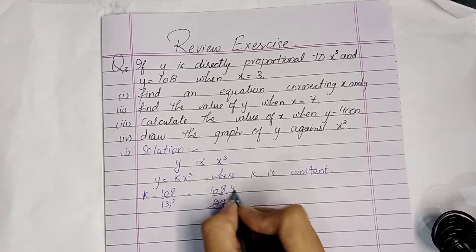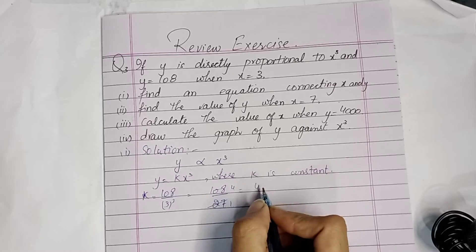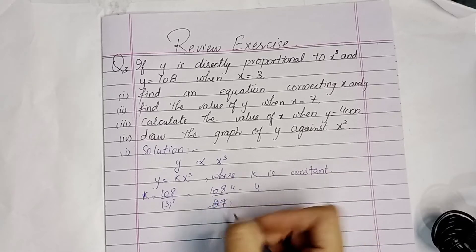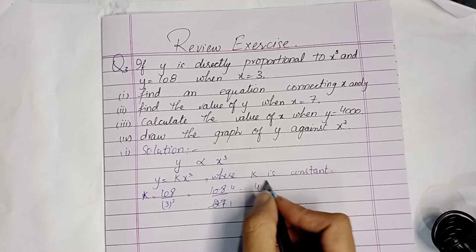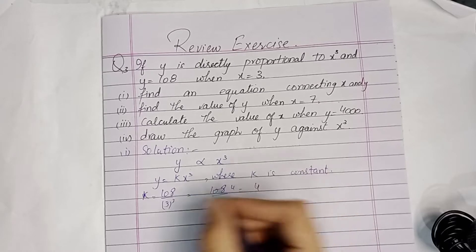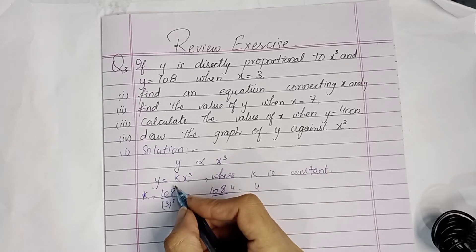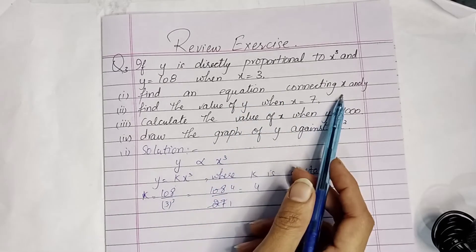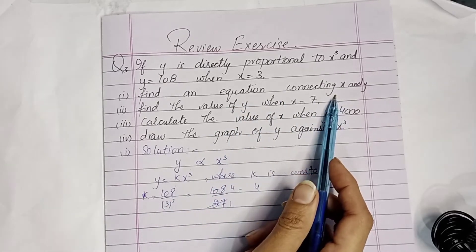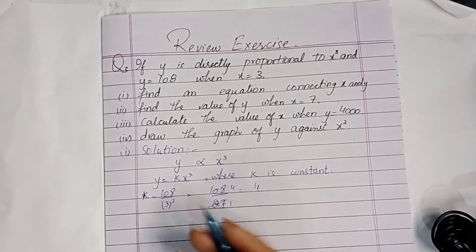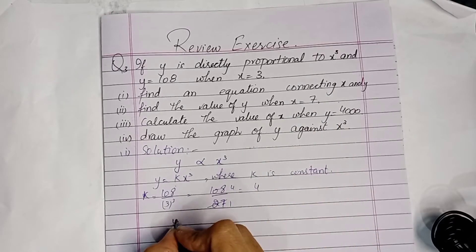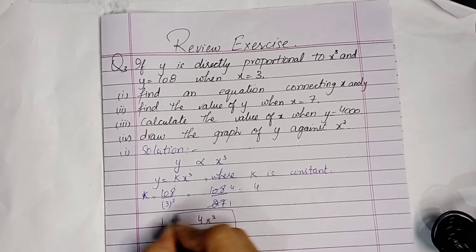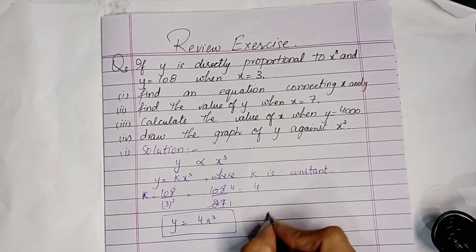The constant value is 4. So you have k equals 4, and the equation connecting x and y is y equals 4x cubed. This is the answer of part 1.